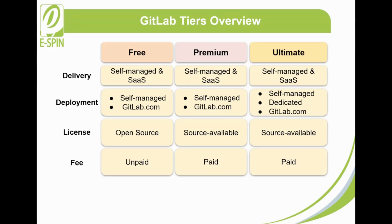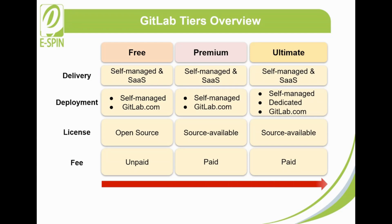GitLab tiers move from Free, then to Premium, and finally to Ultimate. GitLab Free offers basic features, GitLab Premium includes additional features for a larger number of users, and GitLab Ultimate is the highest tier with even more features better suited for organizational use.